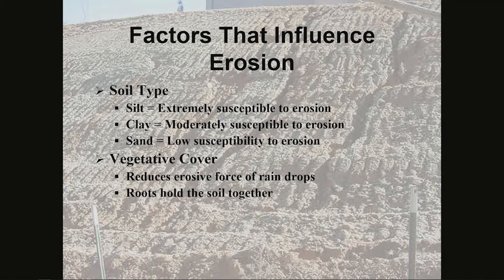Vegetative cover is one of the biggest factors that influence erosion. It reduces the erosive force of raindrops. The roots hold that soil together. As the raindrop comes down or the water flows overland, those roots help to hold the soil particles together.